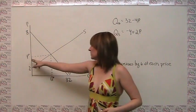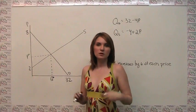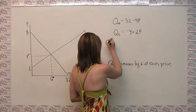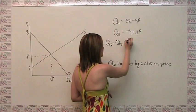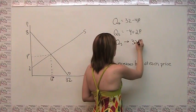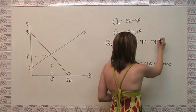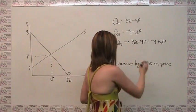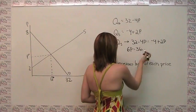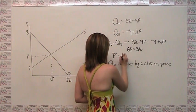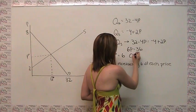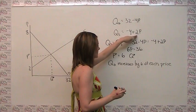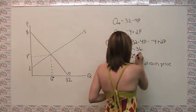Next we want to figure out where our original equilibrium price and quantity are. The equilibrium is where quantity demanded equals quantity supplied, so 32 minus 4p equals negative 4 plus 2p. Rearranging to get all the p's on one side and all the numbers on the other, we get 6p equals 36, which means our equilibrium price p* equals 6. Our equilibrium quantity q* we can find by plugging back in: negative 4 plus 2 times 6 equals negative 4 plus 12, which is 8.